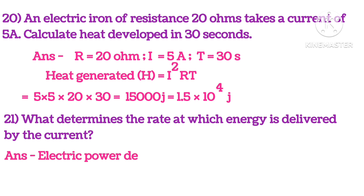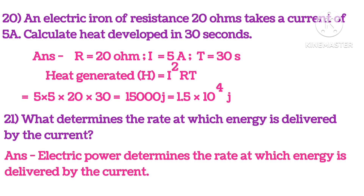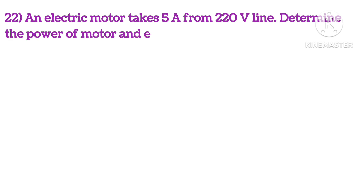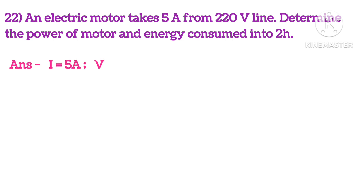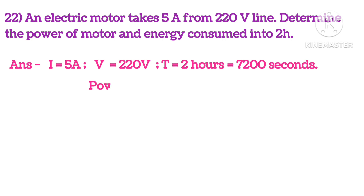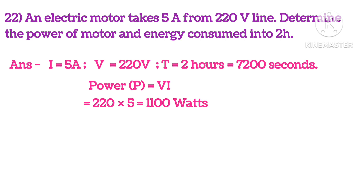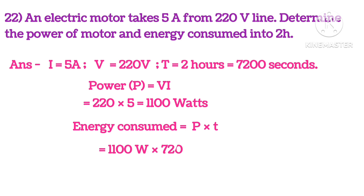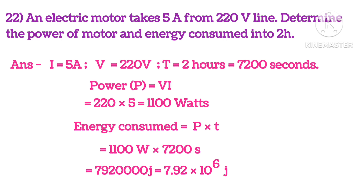What determines the rate at which energy is delivered by the current? Electrical power determines the rate at which energy is delivered by the current. An electric motor takes 5 ampere from a 220V line. Determine the power and energy consumed in 2 hours. Current = 5A, voltage = 220V, time = 2 hours = 7200 seconds. Power P = V × I = 1100 watts. Energy consumed = P × t = 7.92 × 10⁶ joules.